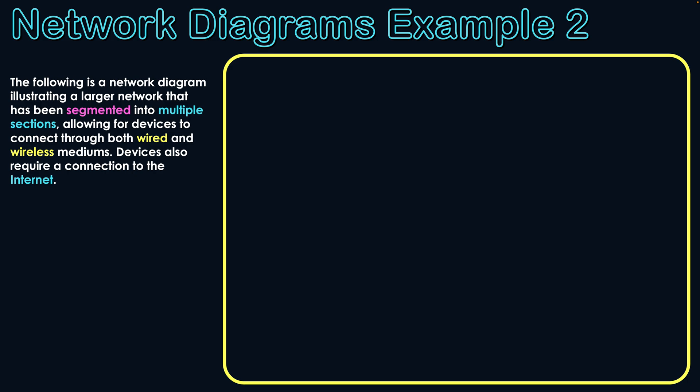Let's start with what's at the center of the network — essentially a router. The reason we use a router is because it supports both wired and wireless connections, but also provides access to the internet. Thus, anything connected to the router will, by being connected, have that connection to the internet. That's the starting point.